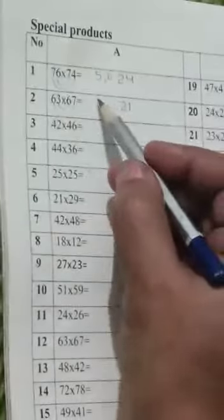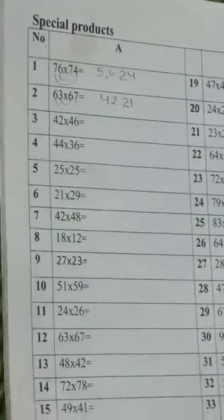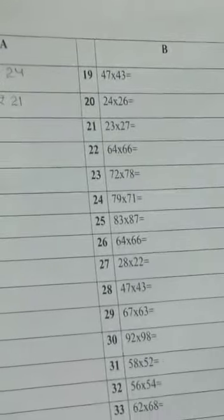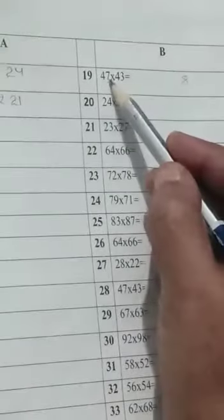36 plus 6 is 42. So 4222 is your answer. Now, B column. One more question. 7 3s are 18. 8, 1 carry forward.